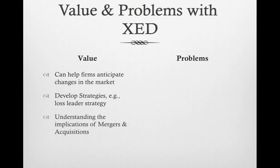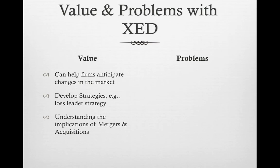XED can also help companies decide about mergers and acquisitions — buying or merging with other companies. As the saying goes, if you can't beat them, join them. Companies competing against each other sometimes purchase each other. By buying out a competitor that makes a substitute good, they reduce competition. Learning about XED and how close a substitute good is to their own helps them understand how much market share they'd gain and how the market would respond if they purchased another firm.